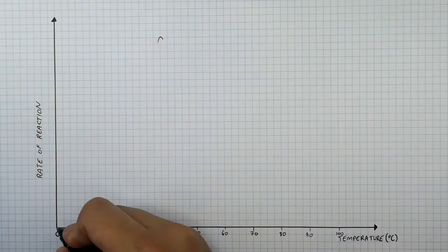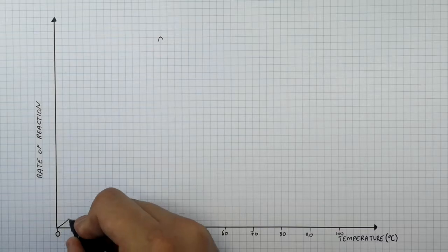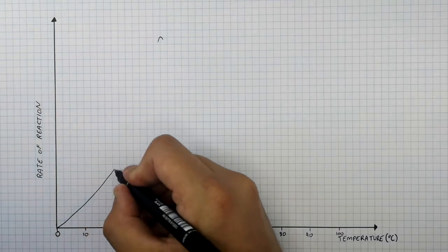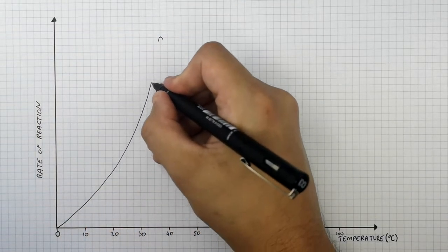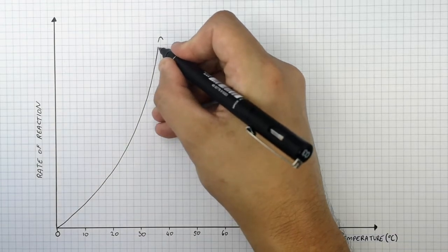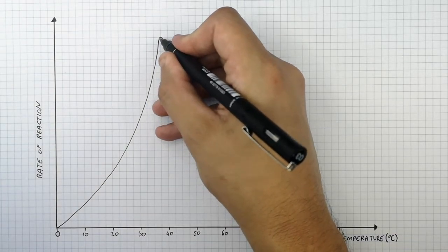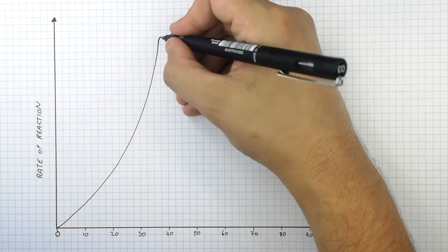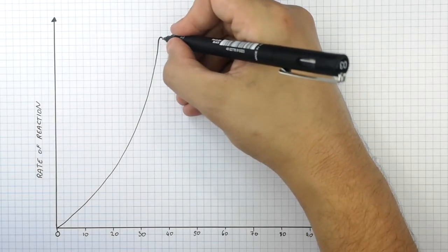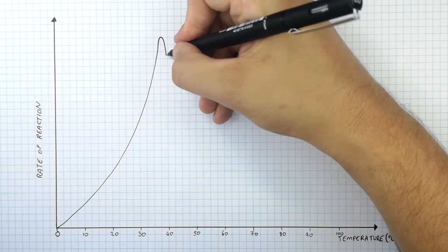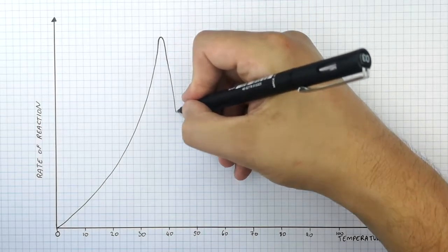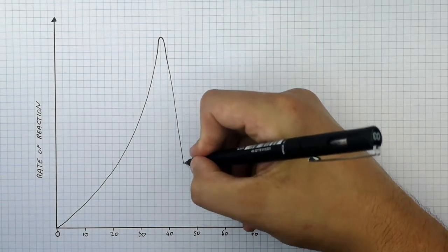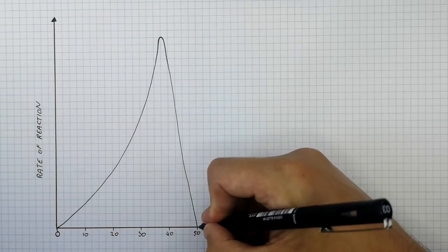At zero degrees, the rate of reaction is zero. When you increase the temperature, you increase the rate of reaction until it reaches the maximum rate of reaction. And then if you increase the temperature beyond the optimum temperature, the rate of reaction is going to decrease back down to a rate of reaction of zero.